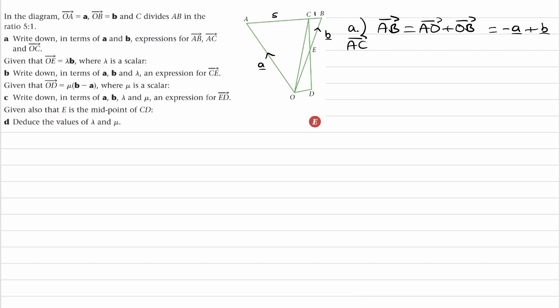For AC, well AC, if you look at where point C is, it's 5 sixths of the way along from A to B. So therefore we can say that AC is equal to 5 sixths of AB, and that will be equal to minus 5 over 6a plus 5 over 6b.